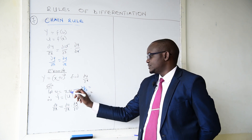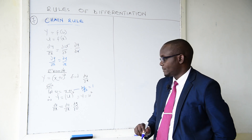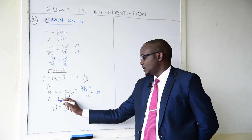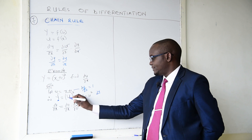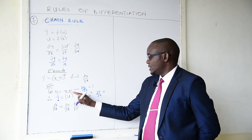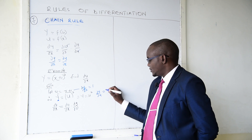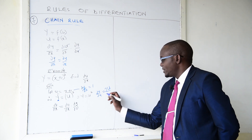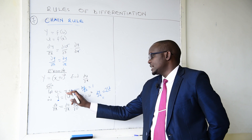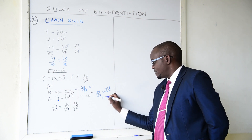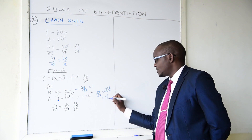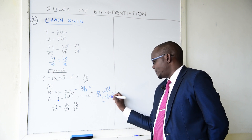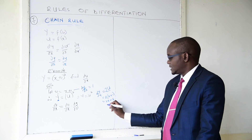When you differentiate x plus 1 to get du/dx, you remain with 1. To get dy/du, you take 2 multiplied by u to the power 2 minus 1, which gives 2u to the power 1, simply 2u. Since u is x plus 1, dy/du becomes 2(x+1), which when expanded is 2x plus 2.